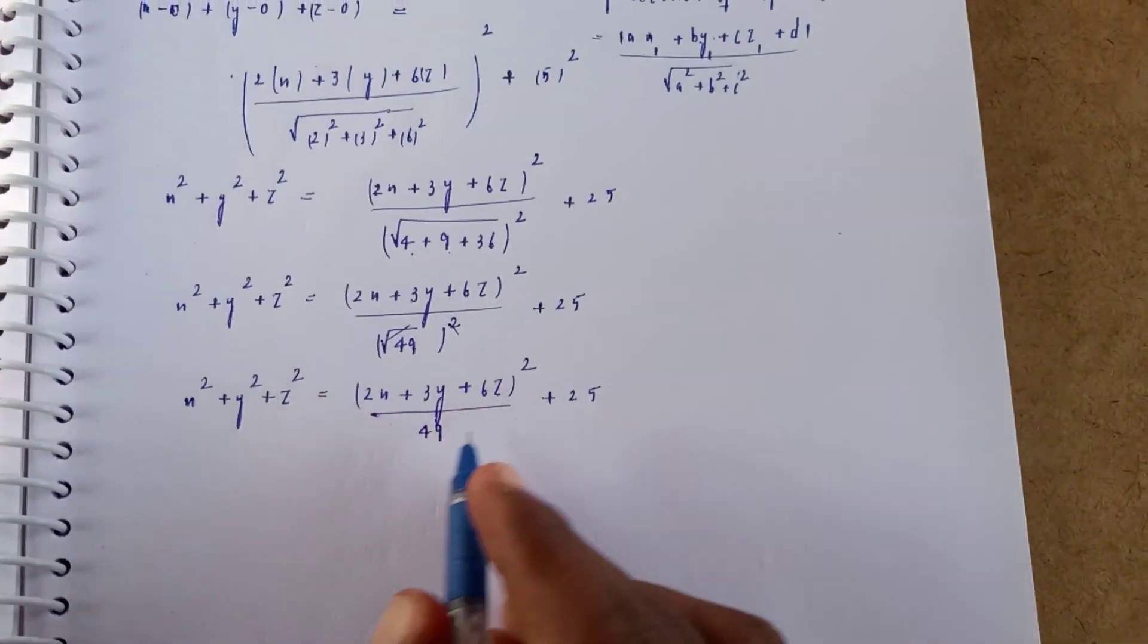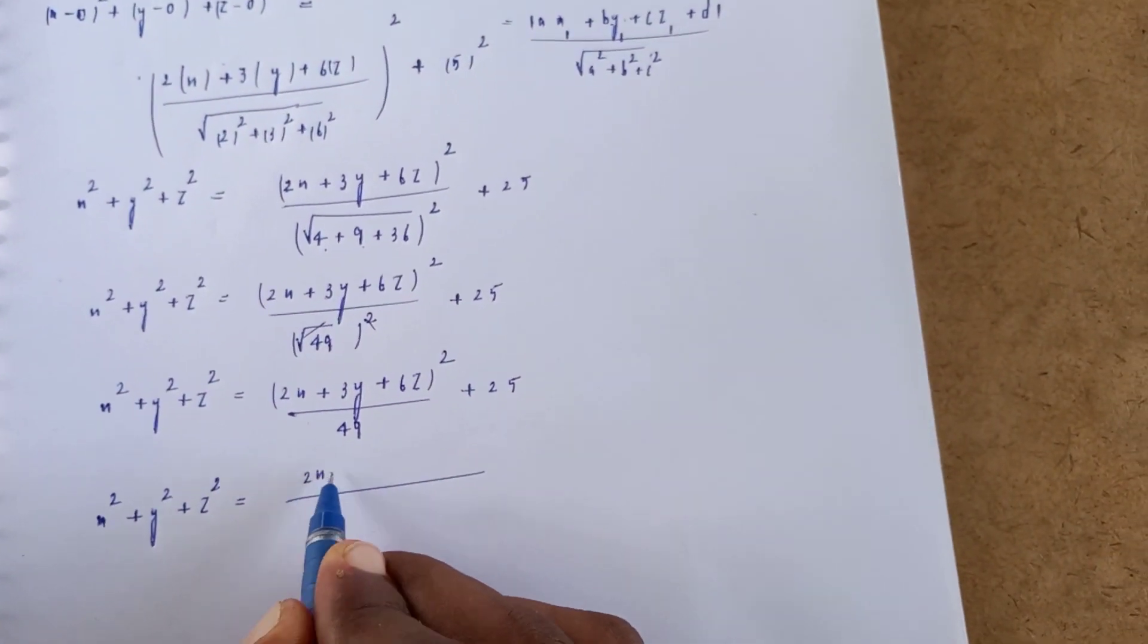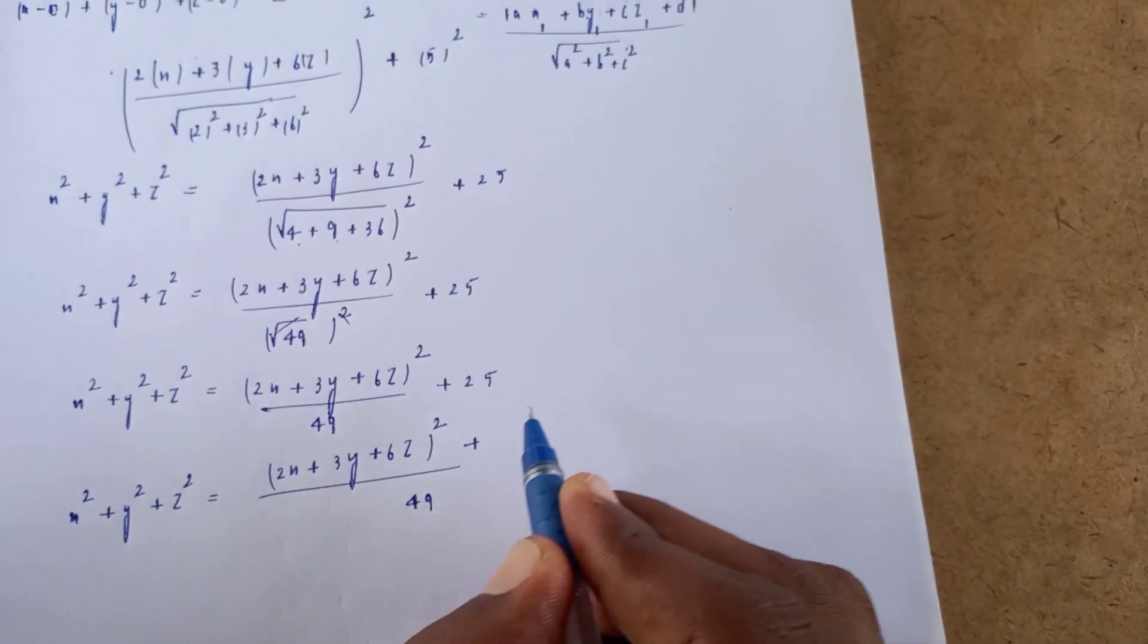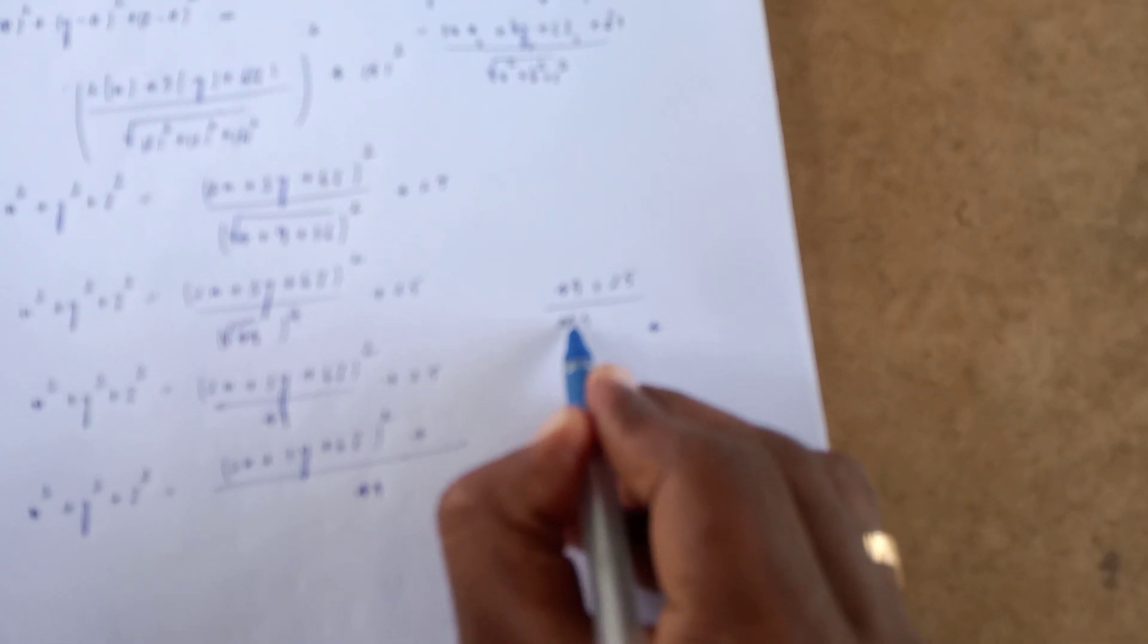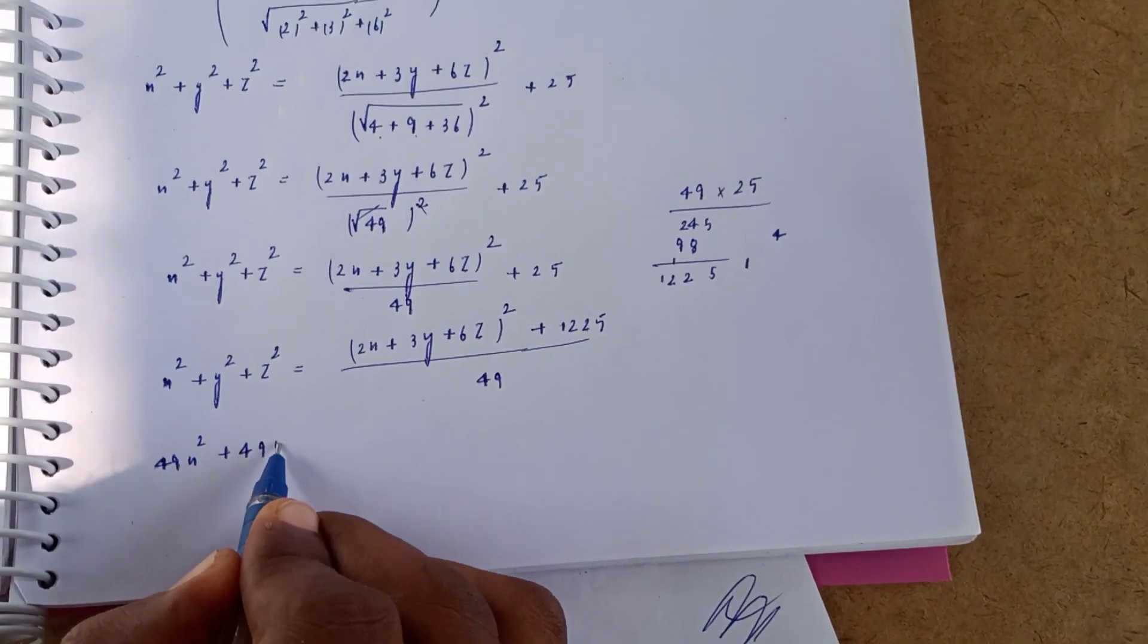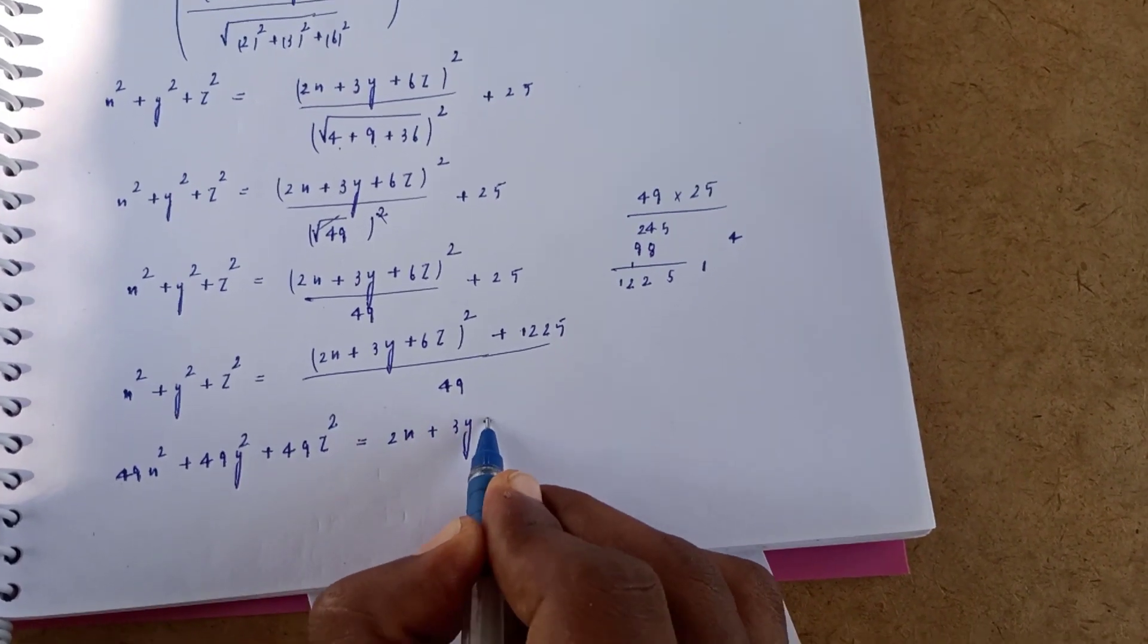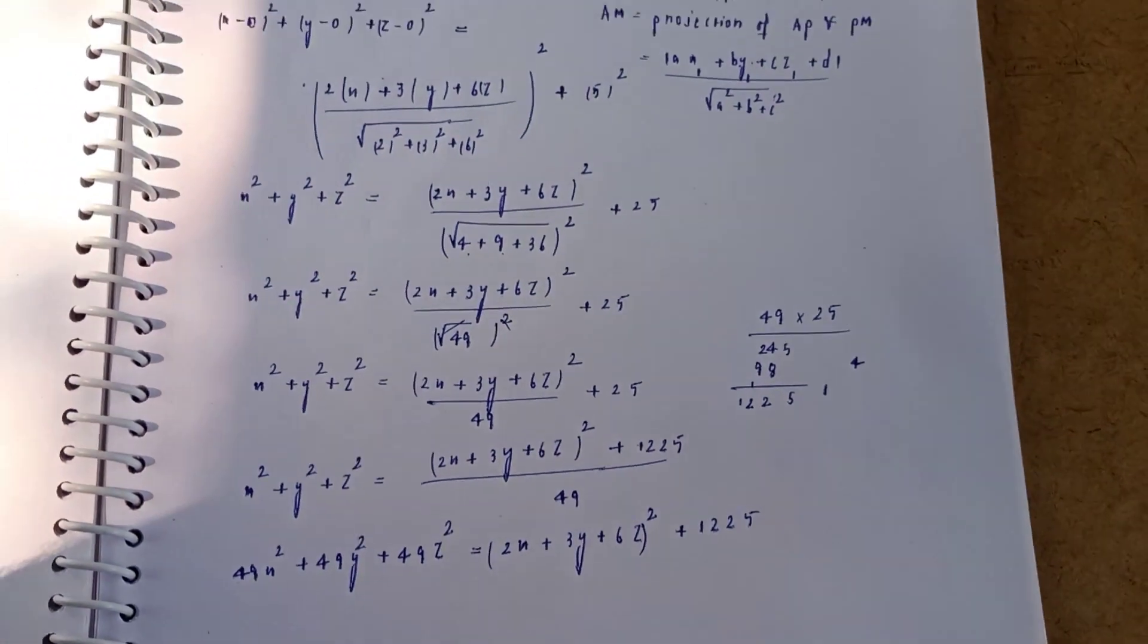Taking LCM of 49 and 25 gives 1225. So 49x² + 49y² + 49z² = (2x + 3y + 6z)² + 1225.